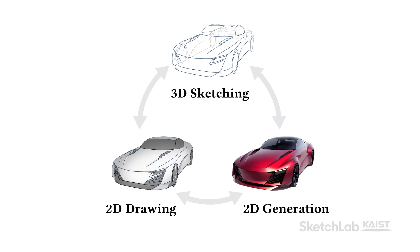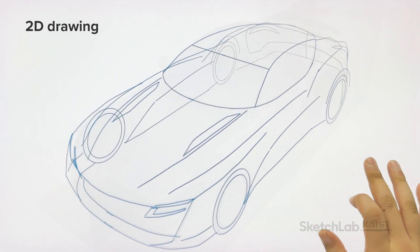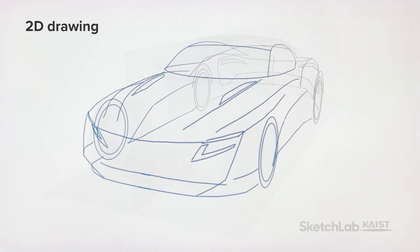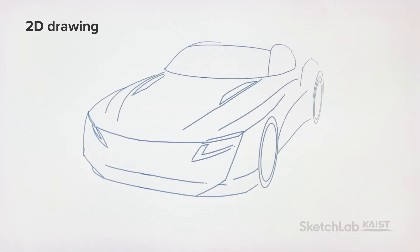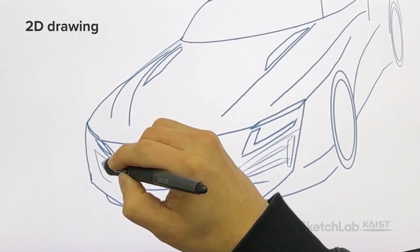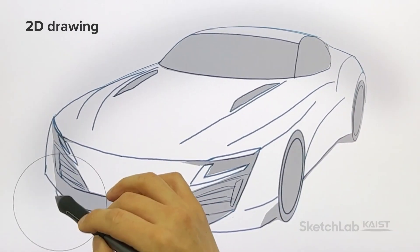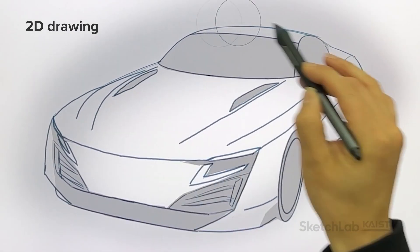Second, designers can use 3D sketches as underlays from any desired viewpoints to create detailed 2D drawings. After they create a 2D workspace, the system performs hidden line removal and launches a 2D editing tool. They can define silhouettes, add details, and shade surfaces to flesh out their design intents.